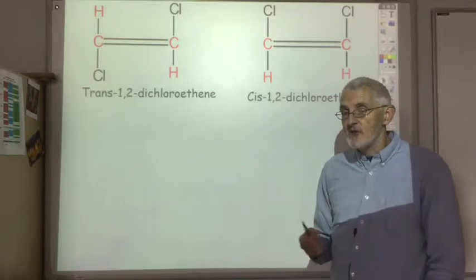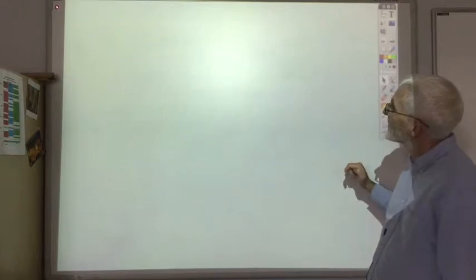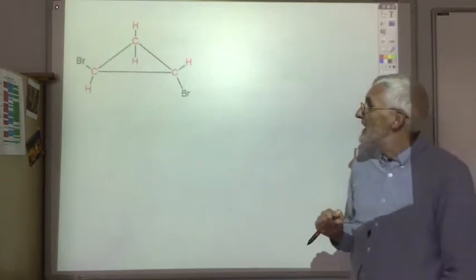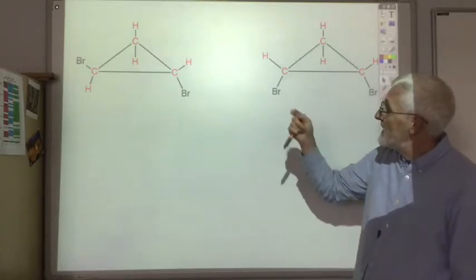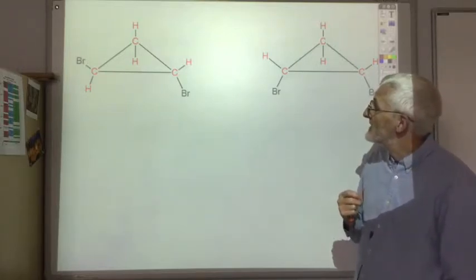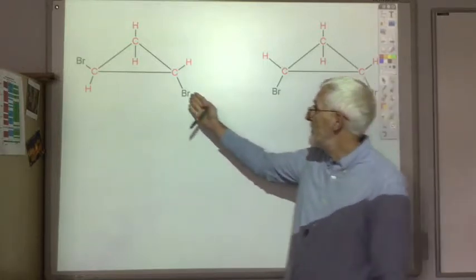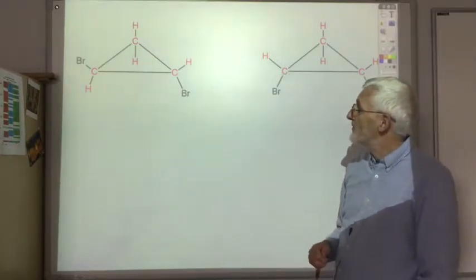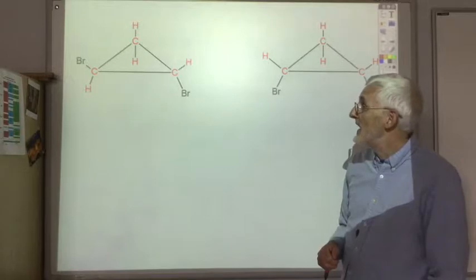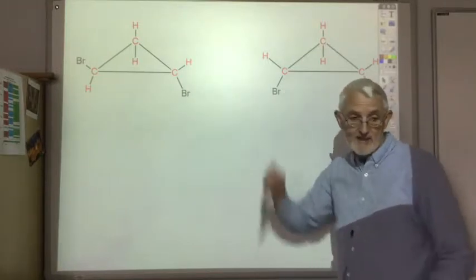The other structural feature that can stop free rotation is a ring. In both cases here we've got cyclopropane and on two of the carbons a hydrogen has been replaced by a bromine. So we've got in both cases 1,2-dibromo-cyclopropane. But again, we can't change this into this.